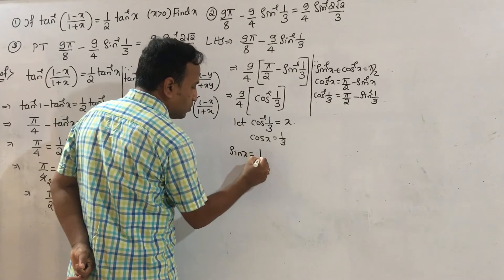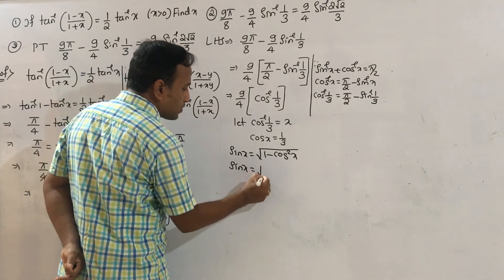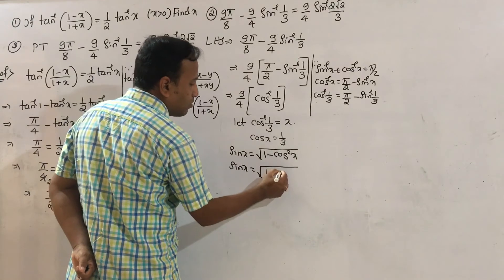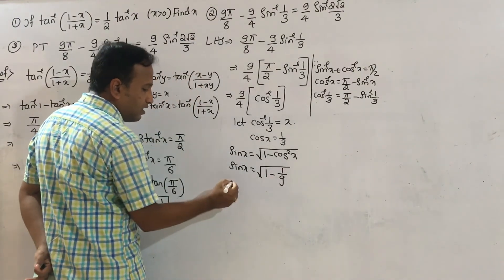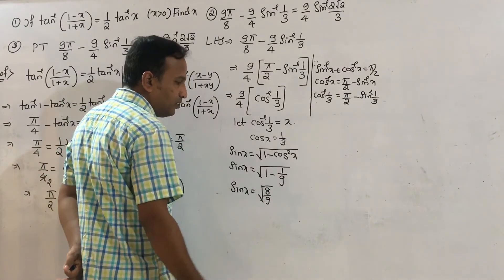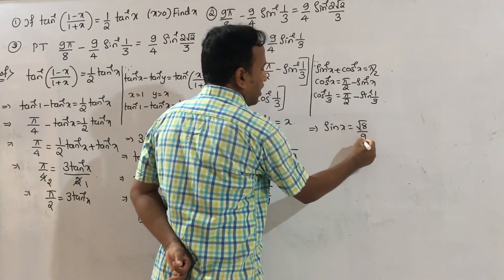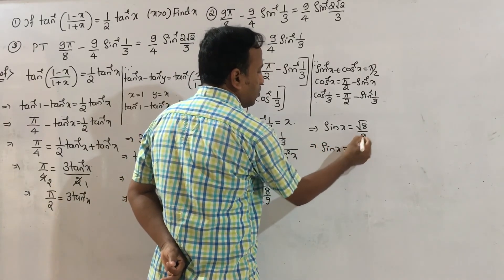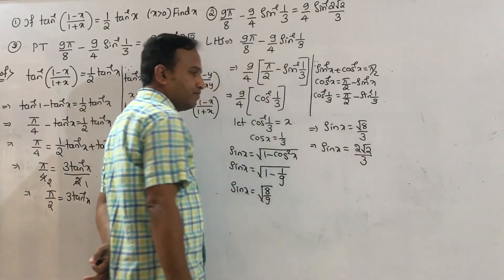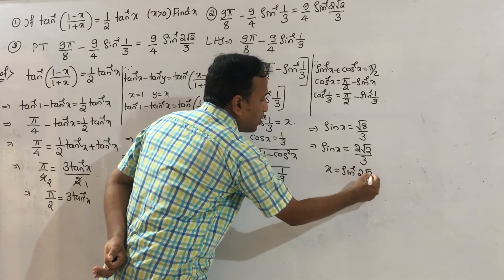Here sin x equals square root of (1 minus cos²x). Cos x equals 1 by 3, so cos²x equals 1 by 9. Therefore sin x equals root of (9 minus 1) by 9, that is root of 8 by 9. Sin x equals 2 root 2 divided by 3. So x equals sin inverse (2 root 2 divided by 3).